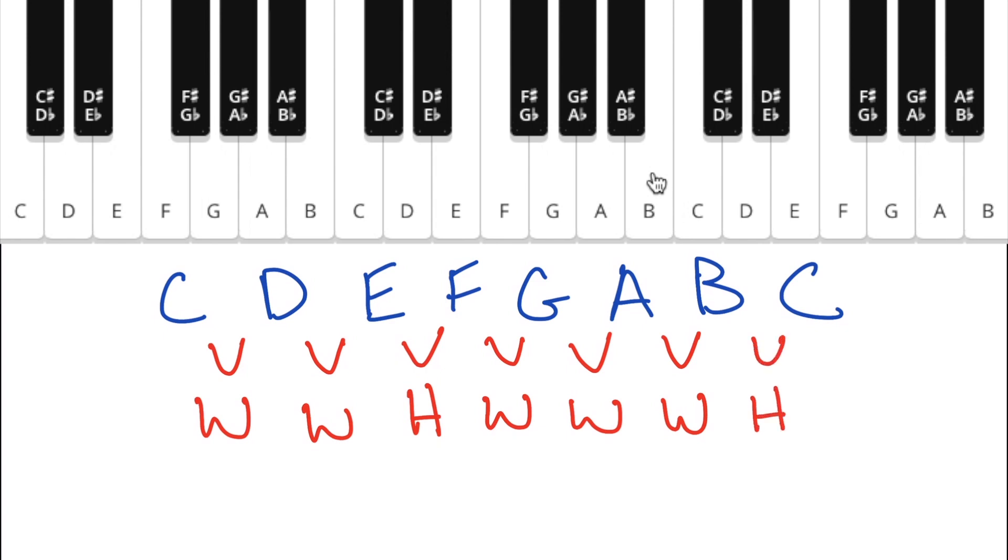So the formula that we get for the major scale is whole, whole, half, whole, whole, whole, half. We've now figured out the formula that works for every single major scale in all of music. This is the pattern every single time.